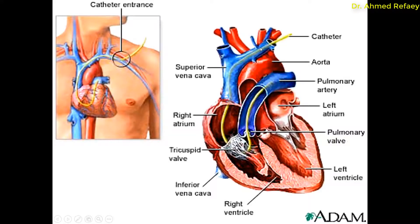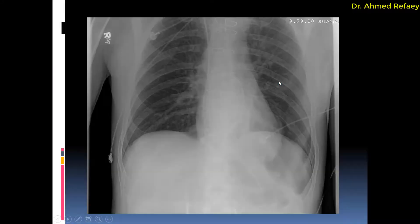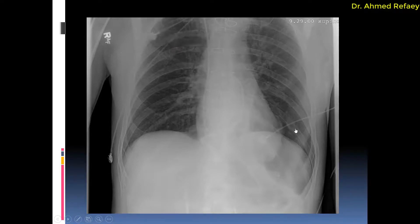Another example of a Swan-Ganz catheter inserted through the left brachiocephalic vein to the superior vena cava, right atrium, right ventricle, and pulmonary trunk, with its tip located in the pulmonary artery — either right or left. This is an example of correct placement, as you see: going to the superior vena cava, right atrium, right ventricle, pulmonary trunk, with the tip located proximally in the region of the right pulmonary artery.